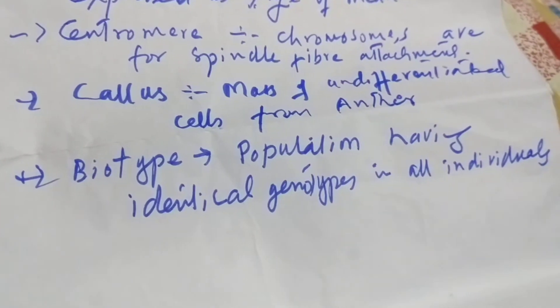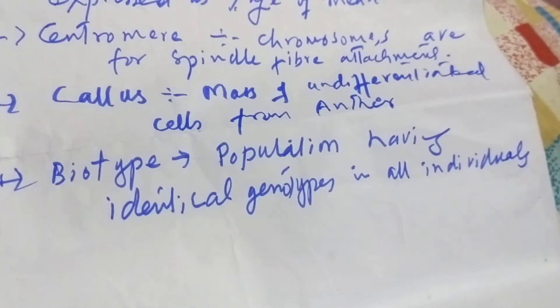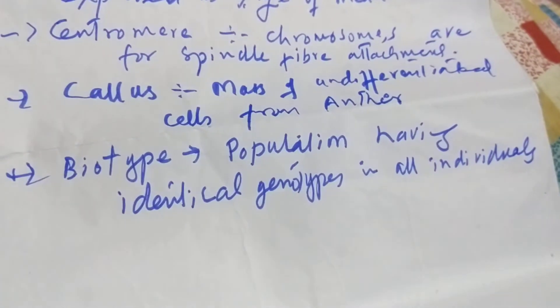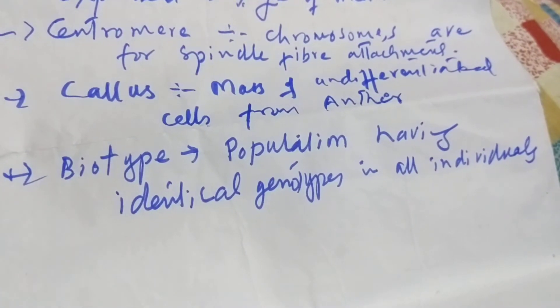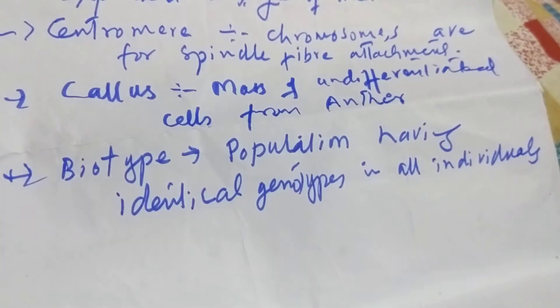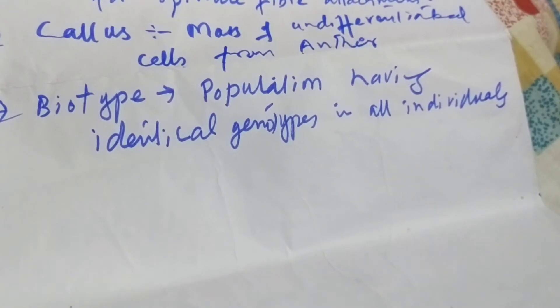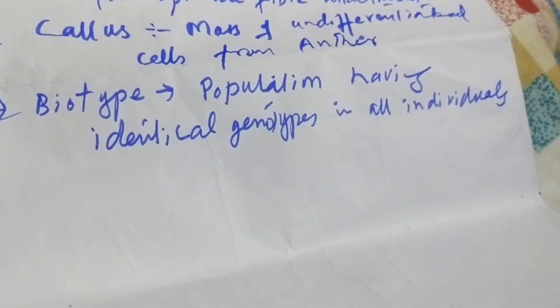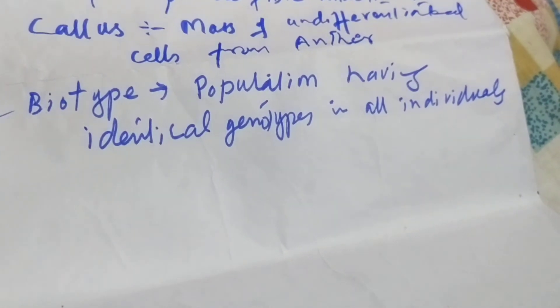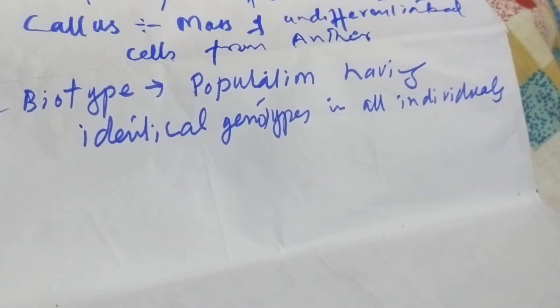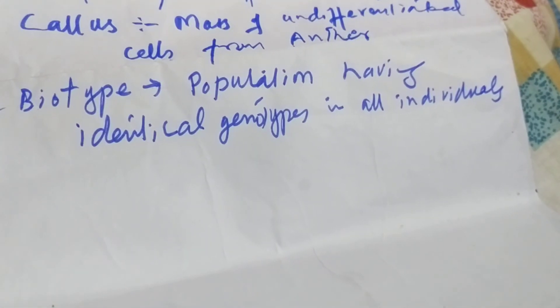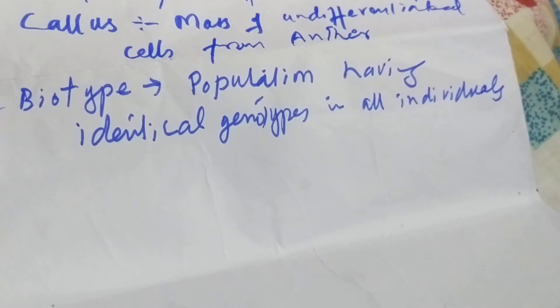Centromere is the site on chromosomes for spindle fiber attachment. Callus is the mass of undifferentiated cells from anther. Biotype is the population having identical genotypes in all individuals.